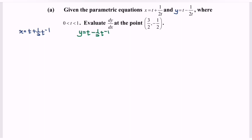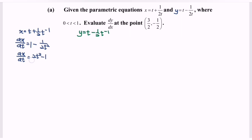First, focus on the left-hand side. Differentiate x with respect to t, and we will have dx/dt equals 1 minus 1 over 2t squared. Equating the denominator, dx/dt equals 2t squared minus 1 over 2t squared.